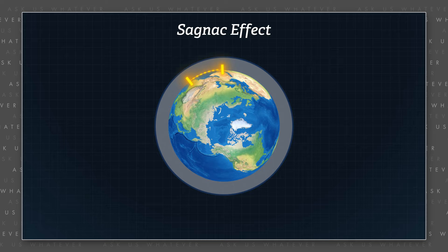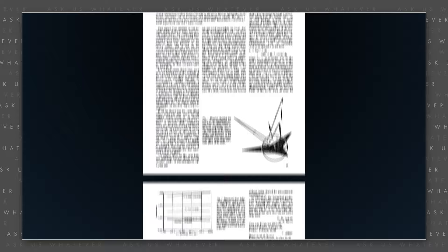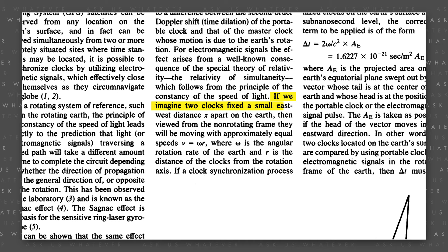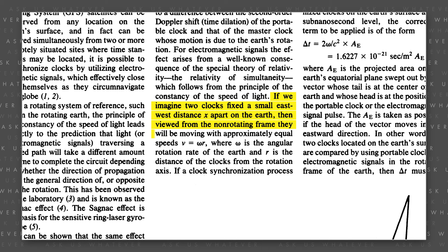But what if we look at the propagation of electromagnetic waves in a rotating frame between two points that do not complete a full closed loop? Allan, Weiss, and Ashby state in their 1985 paper: 'If we imagine two clocks fixed a small east-west distance x apart on the Earth,'